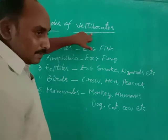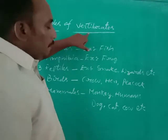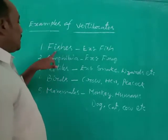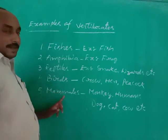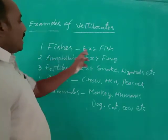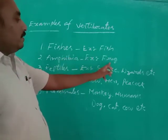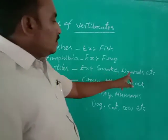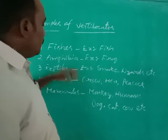Vertebrates are organisms that contain a vertebral column or spinal cord. The example of fishes is fish. The example of amphibians is frog. The examples of reptiles are snakes, lizards, tortoise, crocodiles, and alligators.